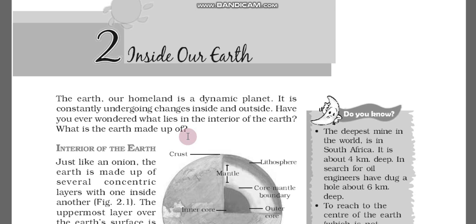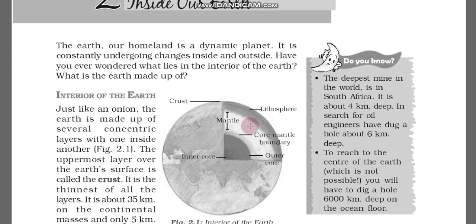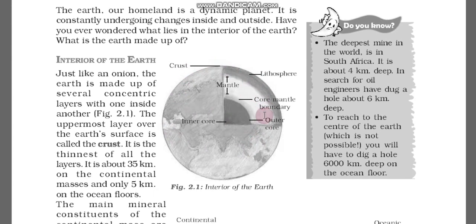We stay on the earth but we do not think about what is inside the earth or what the earth is made up of. So here is the interior of the earth. See this diagram properly and carefully. Just like an onion, the earth is made up of several concentric layers, one inside another. The earth is made up of different layers.